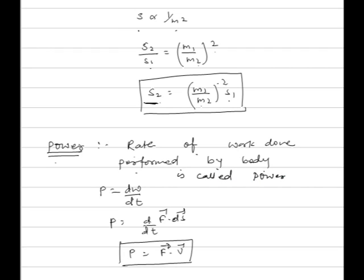Next relation: power. The rate of work done performed by a body is called power. Power equals dW by dt, which is the rate of change of work done. Since work done is given by F dot ds, power p equals F dot v, the dot product of force and velocity.